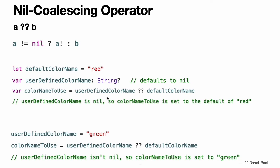This example uses the nil coalescing operator to choose between a default color name and an optional user-defined color name. The user-defined color name variable is defined as an optional String with the default value of nil. Because user-defined color name is nil, the expression using the nil coalescing operator returns the value of default color name, which is red. If you assign a non-nil value to user-defined color name and perform the nil coalescing operator check again, the value wrapped inside user-defined color name is used instead of the default.